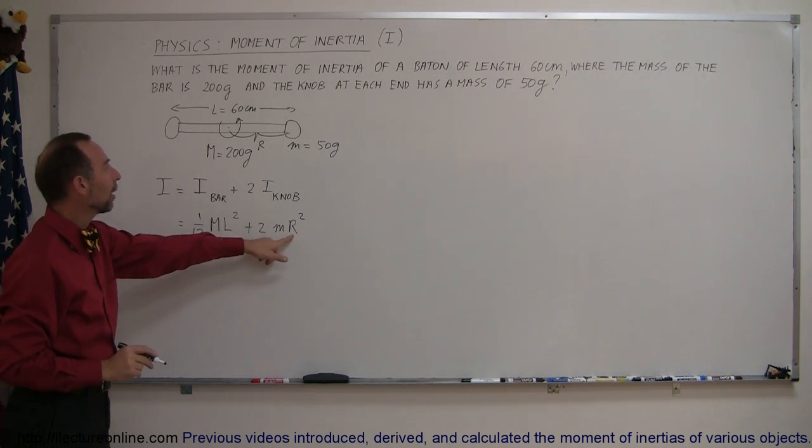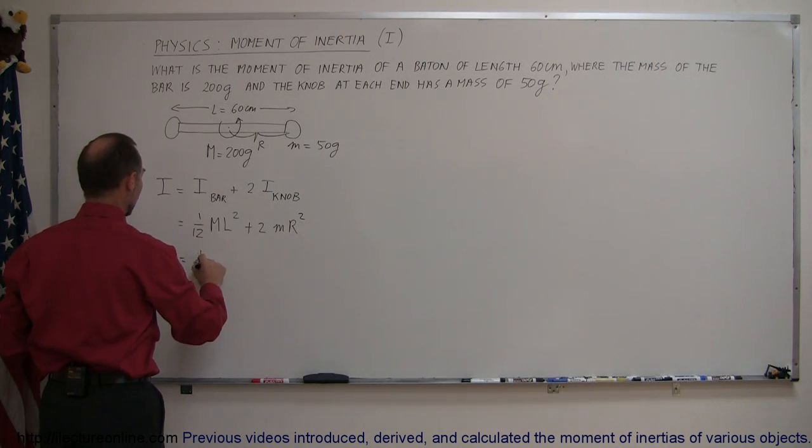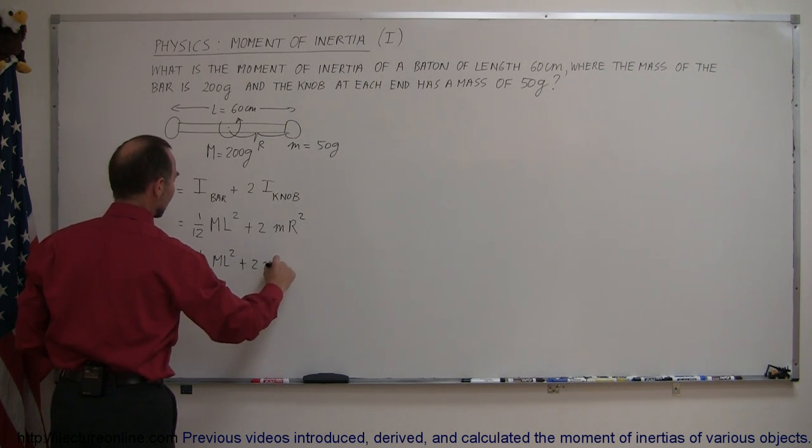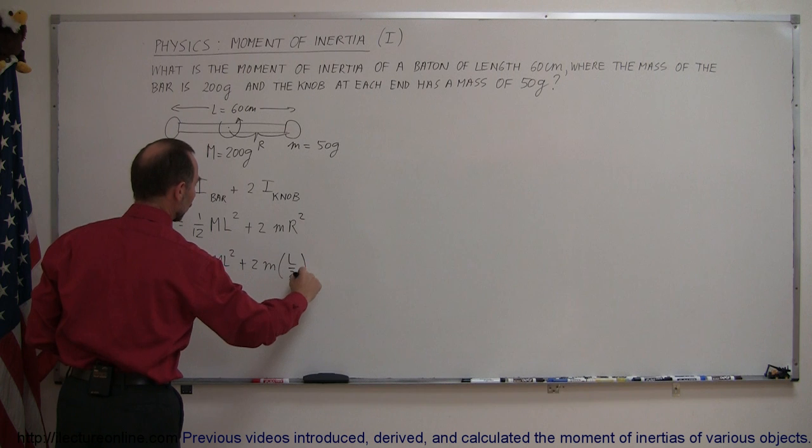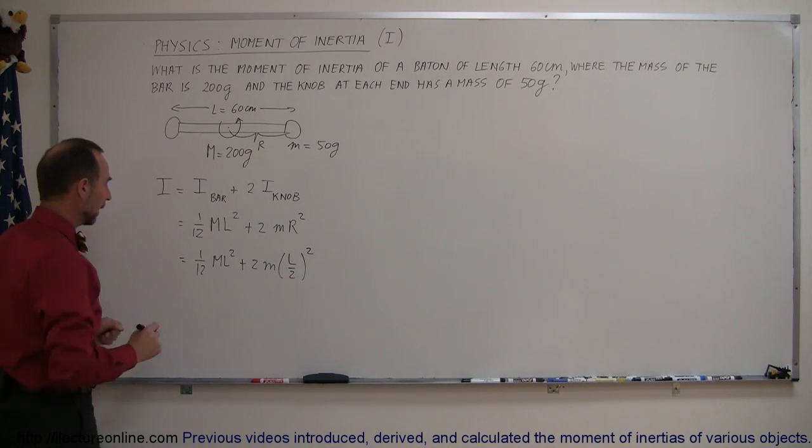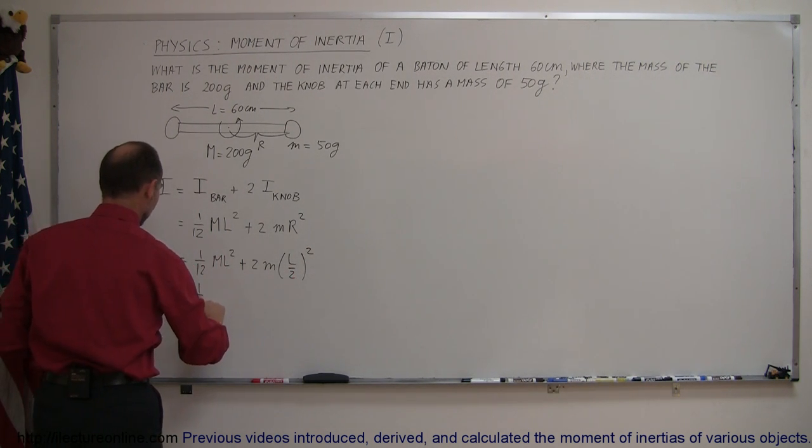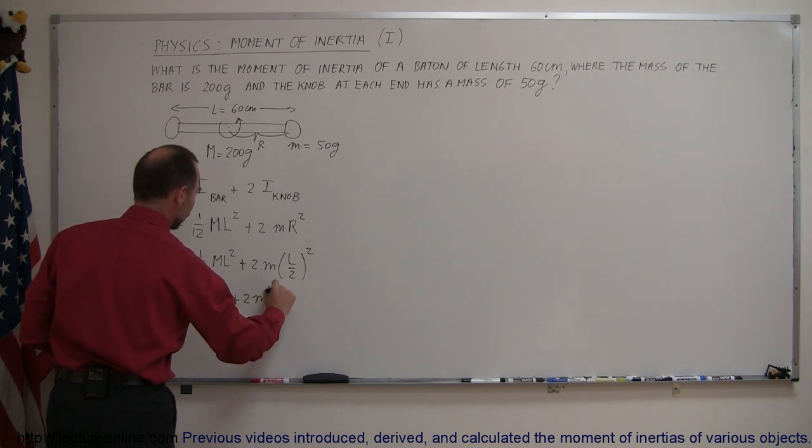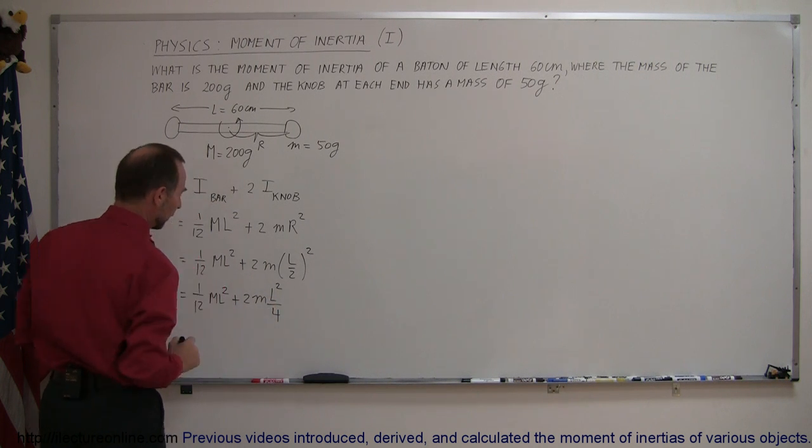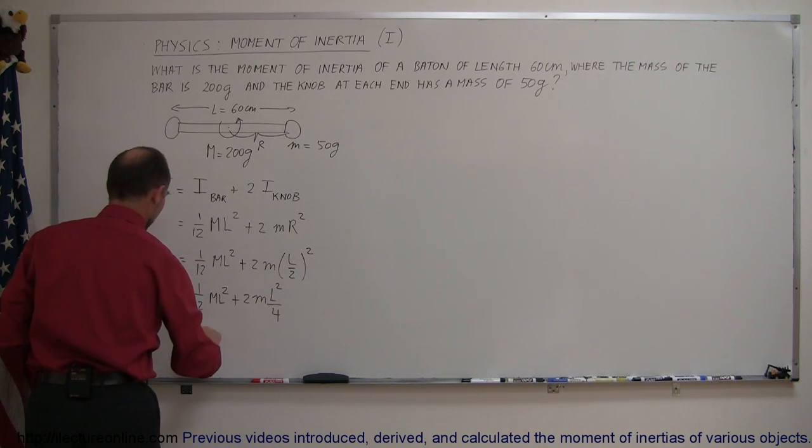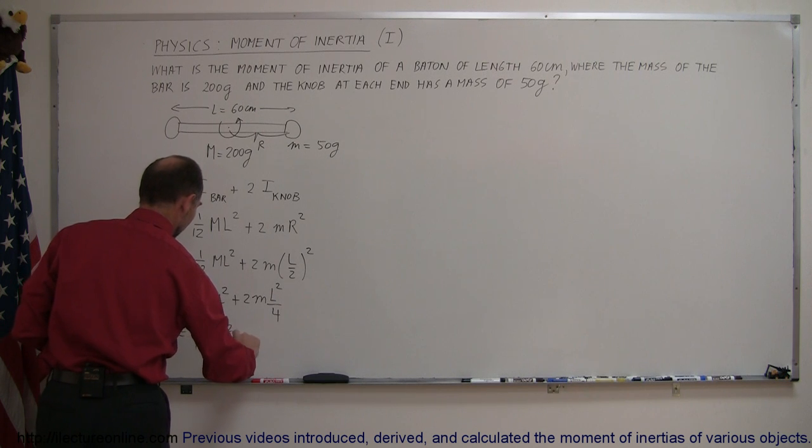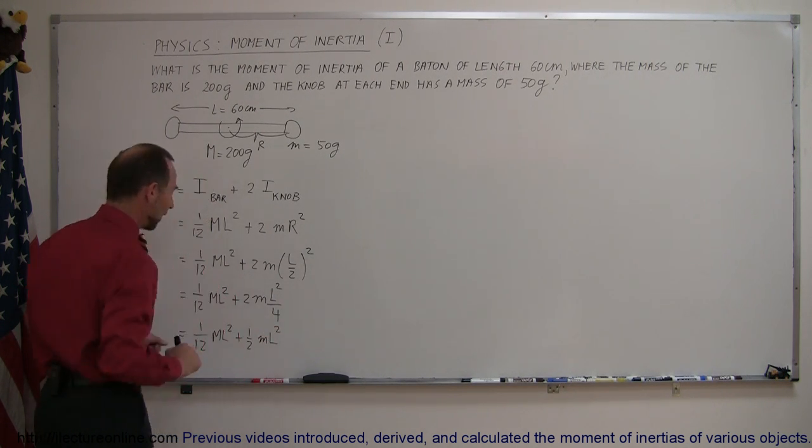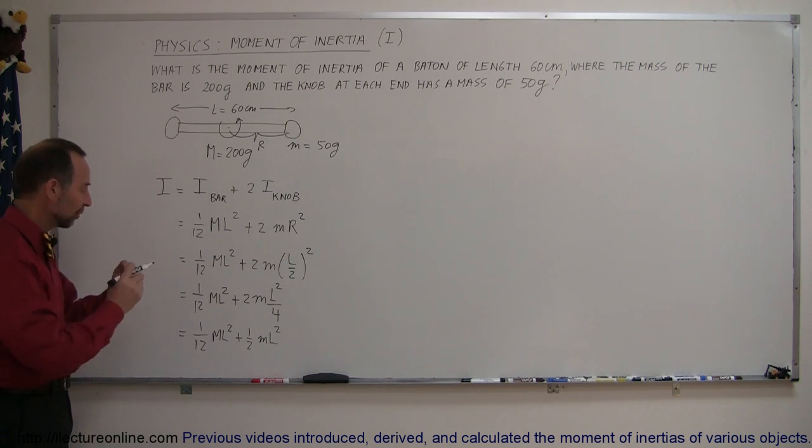So replacing r by l over 2 this can now be written as 1/12th Ml squared plus 2m times l over 2 squared. Squaring that we get 1/12th Ml squared plus 2m times l squared over 4, and of course that can then be written as 1/12th Ml squared plus 1/2 ml squared. Little m for the mass of the knobs at the end, big M for the mass of the bar.